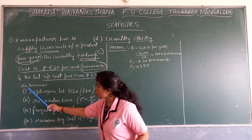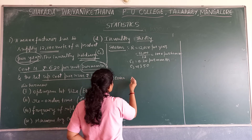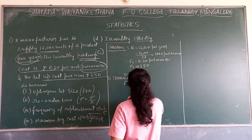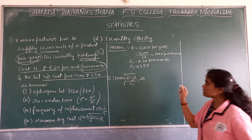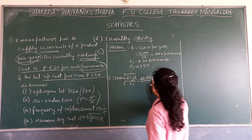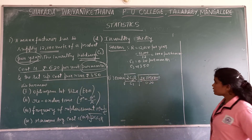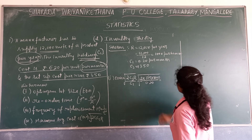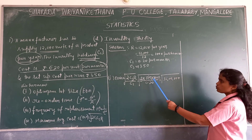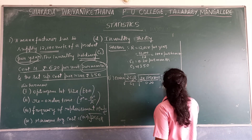Now we solve. The first one: optimum lot size, that is EOQ. EOQ equals the square root of 2 times C3 times R divided by C1. Substituting: 2 times C3 (350) times demand (1,000 per month) divided by C1 (0.20). Multiplying and dividing gives 35 lakh under the square root. Taking the square root of 35,00,000 gives EOQ equals 1,870.82 units.